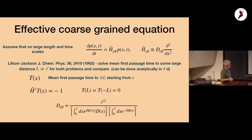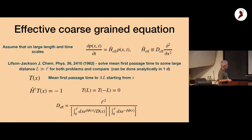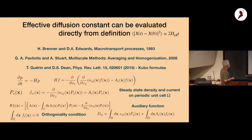The second term in the Lifshitz-Jackson formula depends on D(x). When D(x) is constant, inverting the potential gives the same result — an interesting symmetry. Setting the potential to zero gives the harmonic mean, which is intuitively obvious if you think about electrical circuits in terms of conductivity. This formula has been around for a long time.